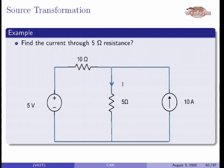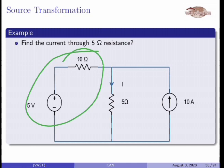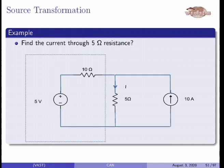Here we can convert the 5 volt voltage source in series with the 10 ohm resistance into a current source in parallel with resistance. The value of that current source is I = V/R = 5 volts divided by 10 ohms = 0.5 ampere, in parallel with 10 ohm resistance. Similarly, the voltage source on the previous side in series with resistance can also be converted into a current source in parallel with resistance, giving 0.5 ampere in parallel with 10 ohm.